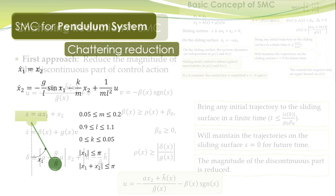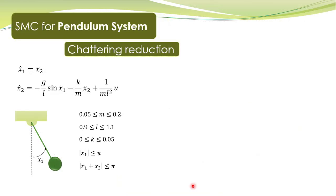Let's demonstrate it with our favorite example of the pendulum system. The dynamics of this pendulum system are given here. The parameters m, l, and k are uncertain, and we also have bounds on the state variables x1 and x2. These are uncertain, however their nominal values — the average values — can be easily computed.